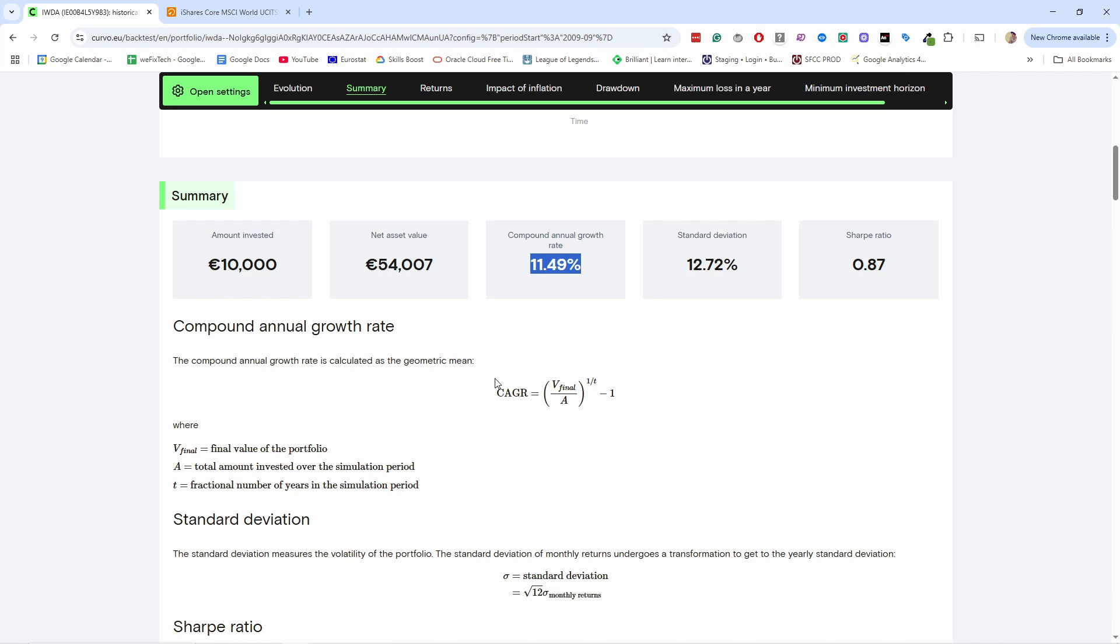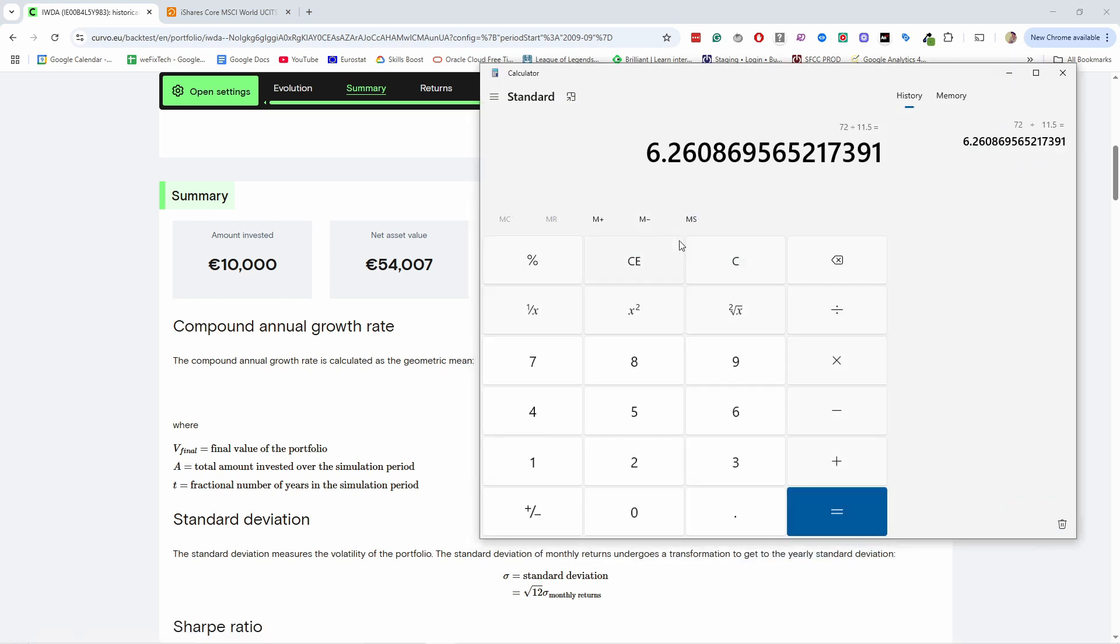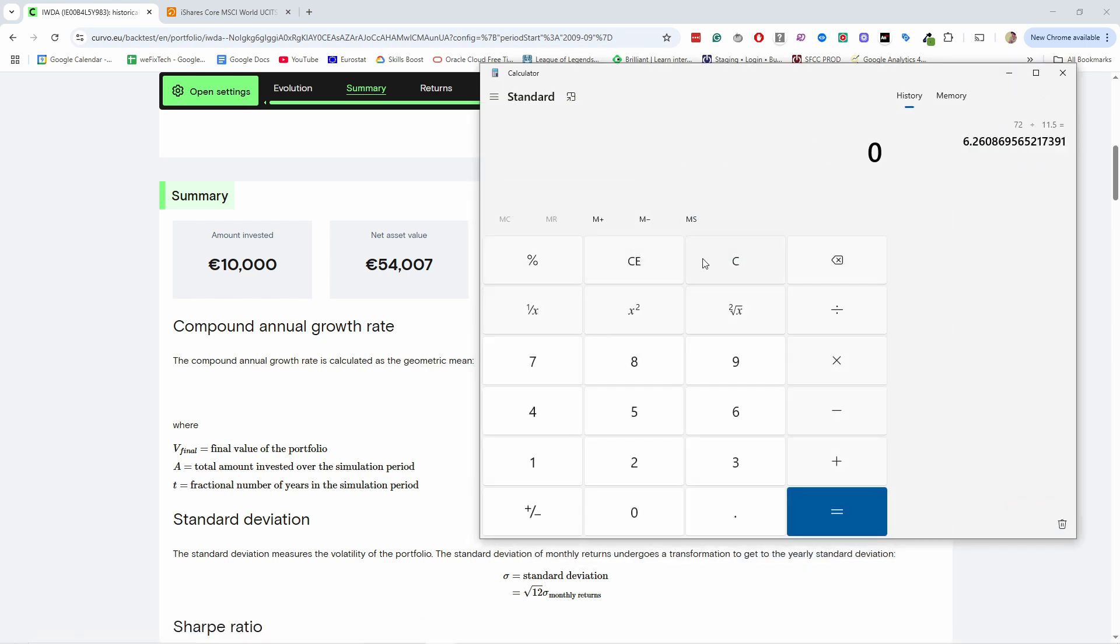And compare that to a bank. Let's say you put it in a bank at 2%, which is pretty high if you take an average. But let's say 72 divided by 2—that's 36 years.